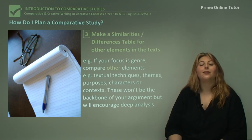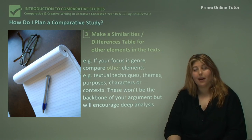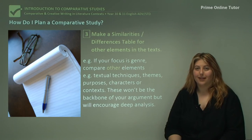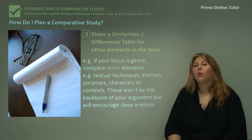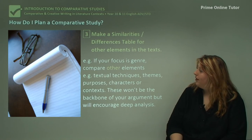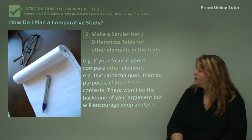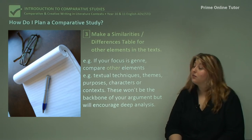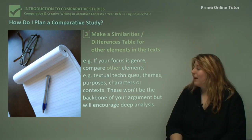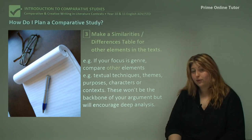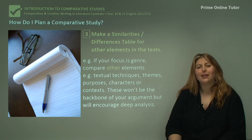After addressing the main reason for the comparison, make another similarities or differences table for the other elements in the texts — the things that are present but are not the primary focus of the comparison. So if you were doing a genre comparison, you might also compare textual techniques, themes, purposes, characters, or contexts. These won't be the backbone of your argument, but they help you achieve deep analysis and really think about how the texts work together.